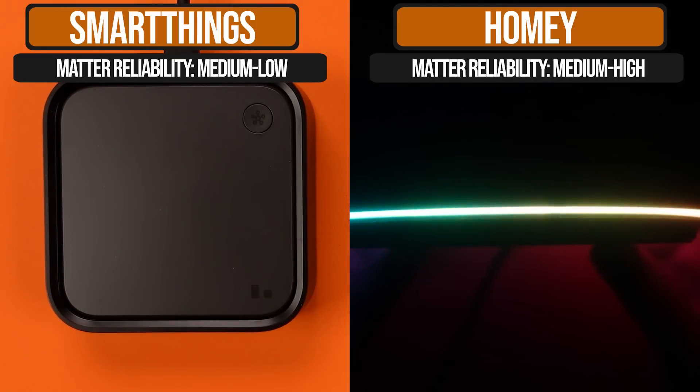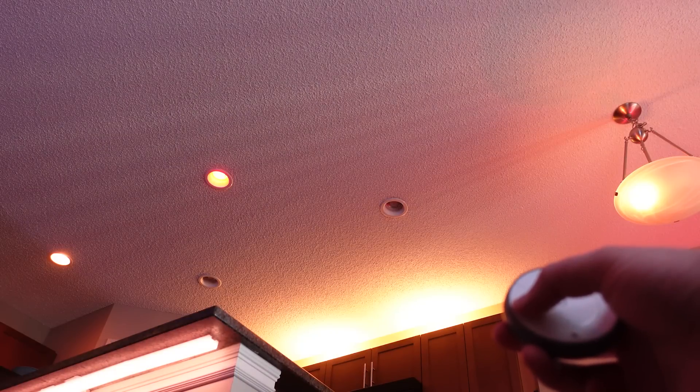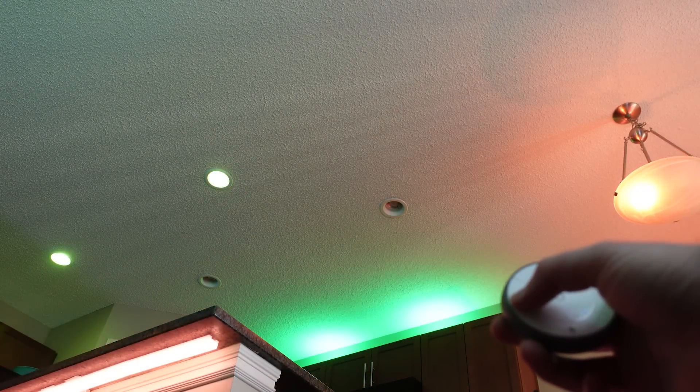I've already explained that your options with new products are far less with Homey, and that's a problem for Atham to sort out and make better. Like if they want to charge the prices they are for their hub, they've got to get on that. SmartThings is going to give you quite a few options for every device type. In contrast, you're probably going to get one to two with Homey, maybe more in some cases for some of the bigger device types. However, what I do like is that I'm finding inexpensive options with Homey, and they seem to be expanding on those.